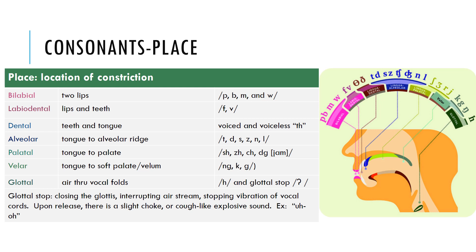Bilabial means both lips come together — sounds like 'p,' 'b,' 'm,' and 'w.' Comparing 'p' and 'b': 'p' is voiceless, 'b' is voiced — you can feel the difference by placing your hand on your throat. Labiodental means lips and teeth come together — sounds 'f' and 'v.' 'F' is voiceless, 'v' is voiced. You can read through the rest to determine which are dental, alveolar, palatal, velar, or glottal.